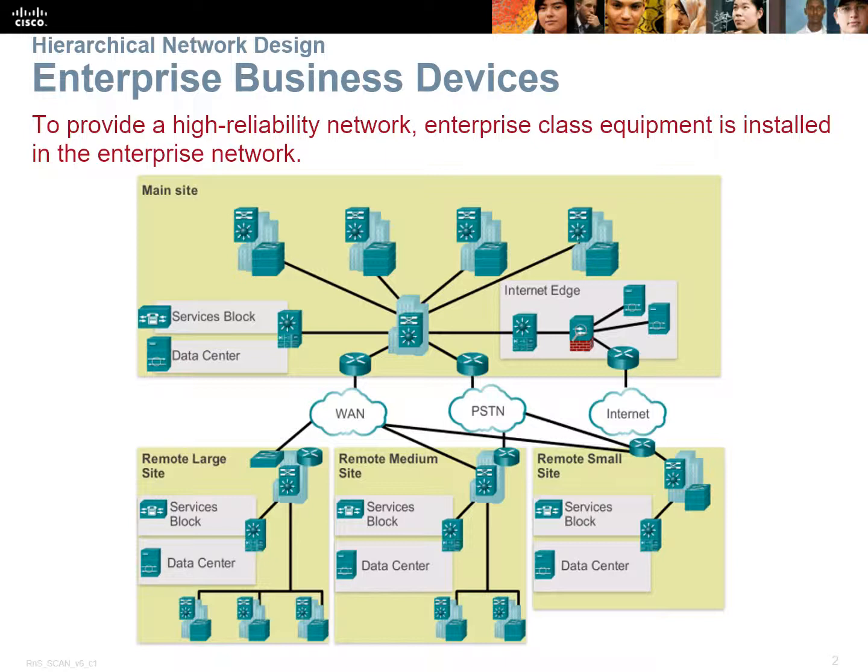We've been spending our time up to now looking at smaller networks and getting those networks going, but now we're looking at larger networks interconnecting different sites. You could have the main site, a remote site, a small office or home office. We've got various types of internet connections, so we're going to look at how we're actually connecting those wide area networks.